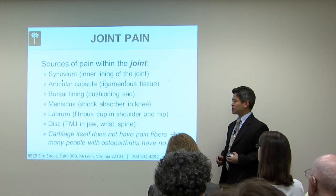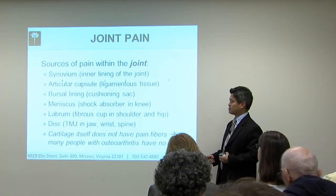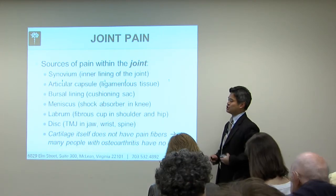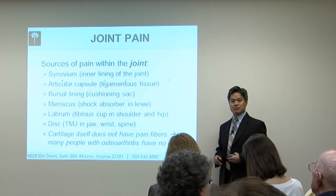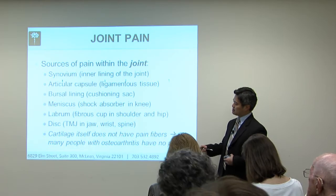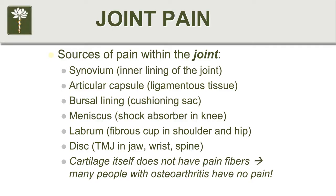This labrum is a fibrous cup inside the joint that many times can cause pain. You've also got discs — not only do you have discs in your spine, but you actually have a disc in the TMJ joint in your jaw. That disc structure is not too different from the discs in your spine, just much smaller.